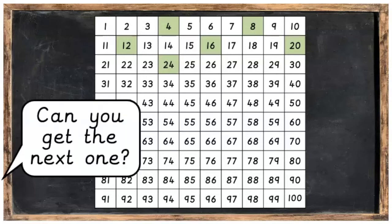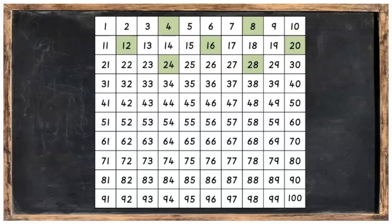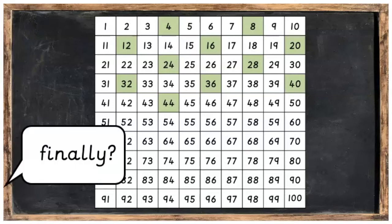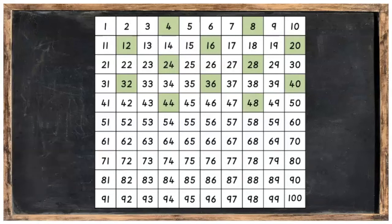Hop four more, can you think what the next one is? Twenty-eight. Well done. And hop four more, we'll land on thirty-two. Hop four more, thirty-six. Forty, then forty-four. And finally forty-eight. Well done.